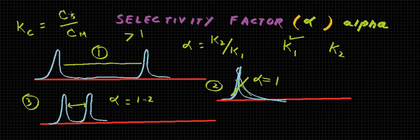For example, there is a column and component A has less affinity or attractive force with the stationary phase, so it will move faster down the column and will be eluted first. So it has a value K1 for its distribution coefficient.